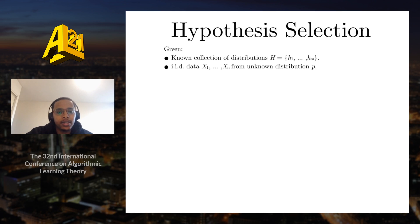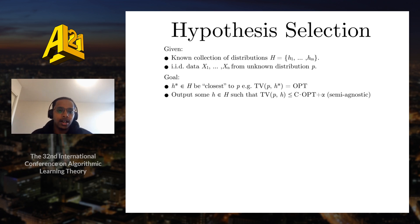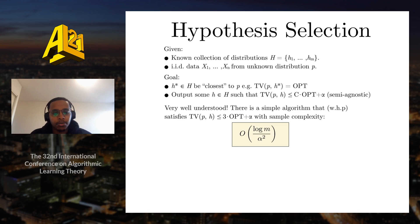Hypothesis selection is a framework compatible with distribution learning. We are given a known collection of distributions H1 through HM and IID data from unknown P. The goal is to output a distribution H from the class such that the total variation distance between H and P is at most some constant C times OPT plus α — this is called a semi-agnostic guarantee. Many simple algorithms achieve this with probability 9/10, outputting a distribution 3·OPT + α close to P, with sample complexity growing logarithmically in M.